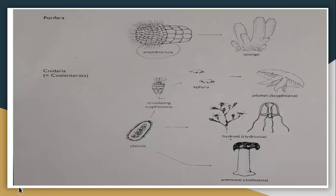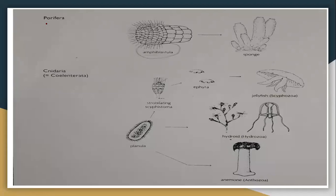In case of porifera, the larval stage is the amphiblastula larva. This is the larval stage and it becomes an adult sponge.